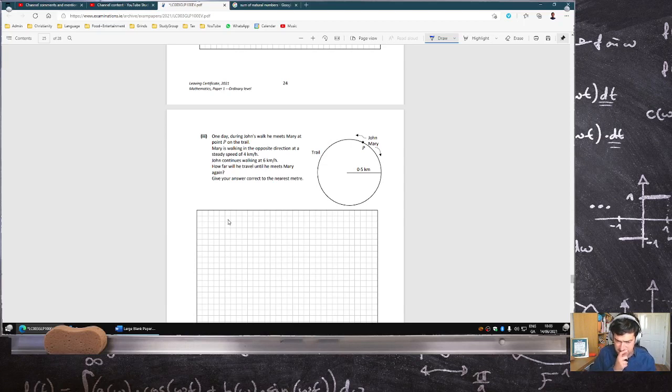Distance is speed multiplied by time. John will walk 4 times t, and Mary will walk 6 times t, and in total they would have walked one full circle, which is 2 pi r.